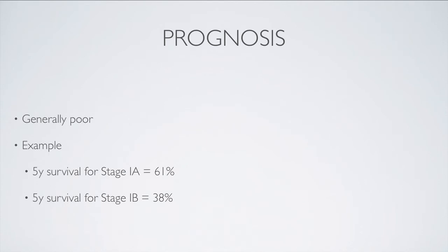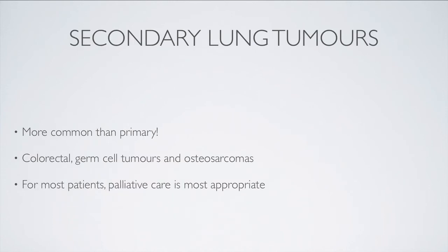The prognosis is generally quite poor in lung cancer. For example, the five-year survival for a stage 1a tumor might be 61%, but a stage 1b would drop to about 38%. Although not the main topic of this podcast, it's important to remember that most lung tumors are in fact secondary lung tumors. The most common primary tumor that results in secondary lung tumors is colorectal, closely followed by germ cell tumors and osteosarcomas. For most patients with multiple secondary lung tumors, palliative therapy is most appropriate.